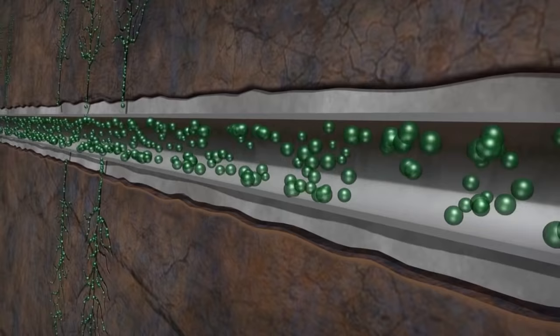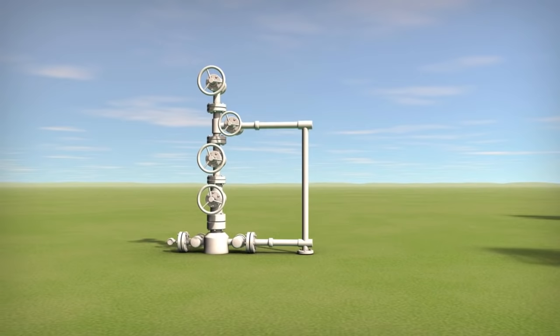Finally, a permanent wellhead, otherwise known as a Christmas tree, is installed and the well is turned to flow back. This allows the oil or natural gas to flow and be captured at the surface, where the sales process begins.